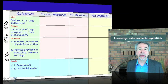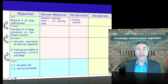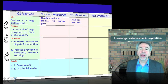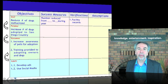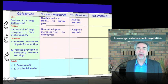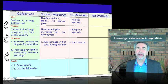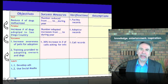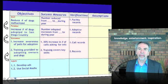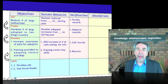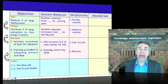Let's add the success measures the group developed. At the goal level, reducing the number of dogs euthanized by a certain number during the year. At the purpose level, increasing the number adopted. At the outcome level, measures there as well — a 30% increase in the number of calls would be a good indicator of increased awareness of pets adopted, and training and so forth. These measures along with verifications provide the basis by which we'll track implementation success as well as evaluate after the fact how successful our effort has been.